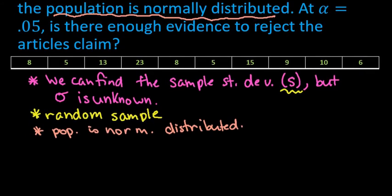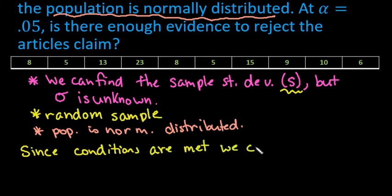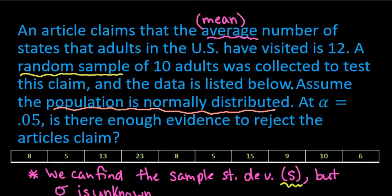Since the conditions are met we can use the t-test. For this one we are going to be using the t-test. Once you've decided what kind of test you are using and that your conditions are met, you're going to write out your null and your alternative hypotheses. You always start with conditions so that you know which test that you're going to run. If we look up here the null hypothesis is going to be our claim. In this case we are claiming that the mean or the average number of states that adults in the U.S. have visited is 12.